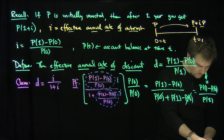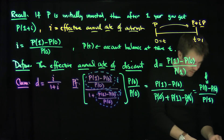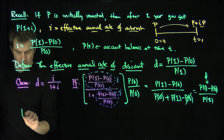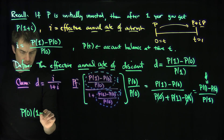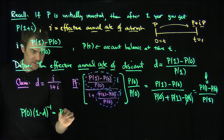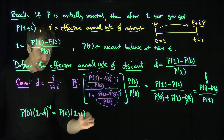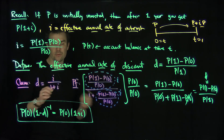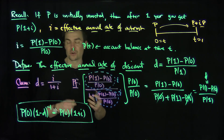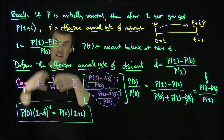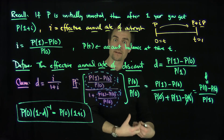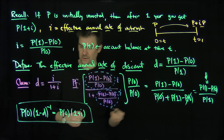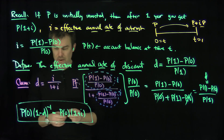This tells us we now have two equivalent payment streams. We have the relationship P(0) · (1 − d)⁻¹ equals P(0) · (1 + i). That is our equivalent relationship, and it tells us how to relate the initial payments under discount and interest. Discount represents getting all of the interest initially and letting it grow to the same value at time 1.